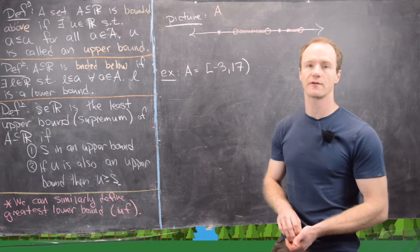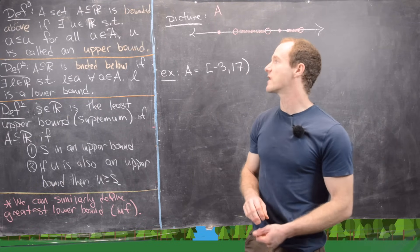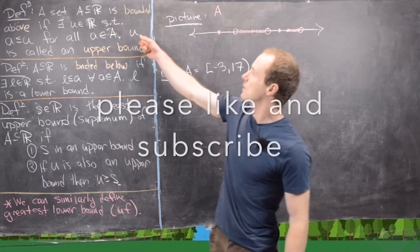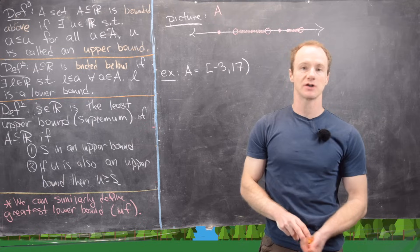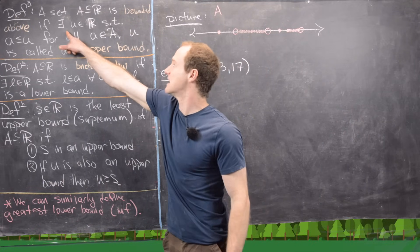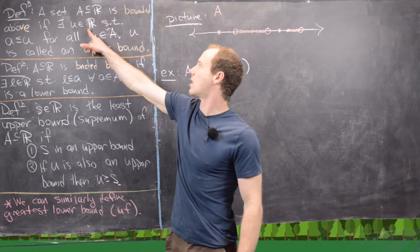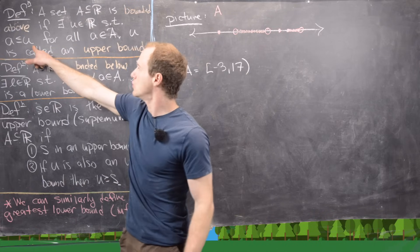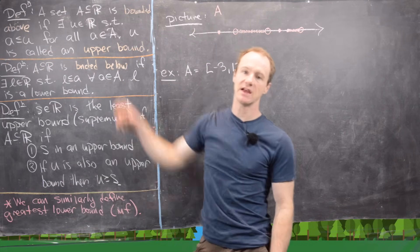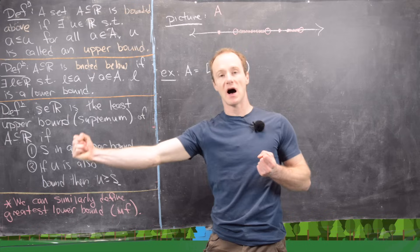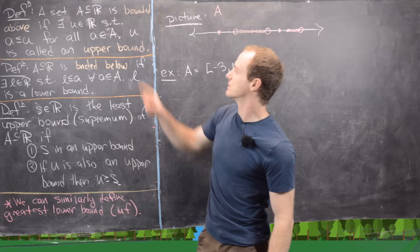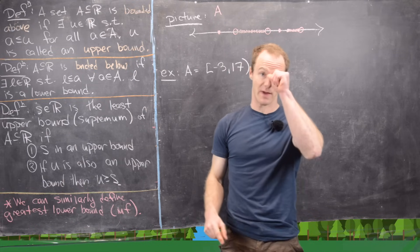Here we're going to start looking at the structure of the real numbers, starting with the least upper bound and the greatest lower bound. So a set A in R, a subset of the real numbers, is said to be bounded above if there exists some U in R such that U is bigger than or equal to every element in A. In that case, we say that U is an upper bound.